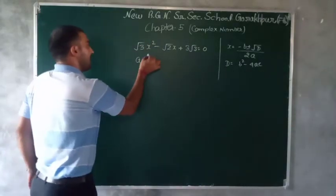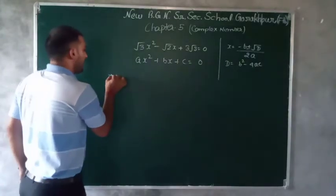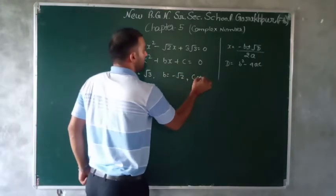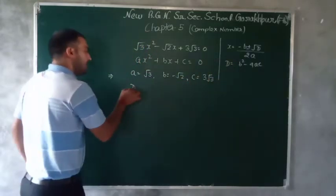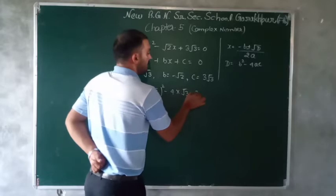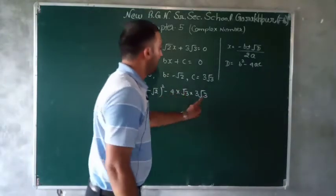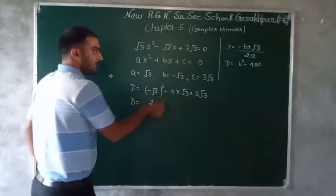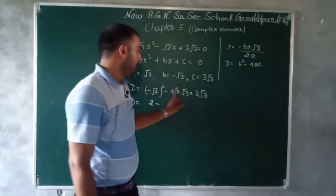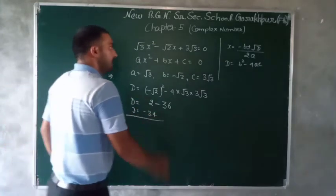Standard form ax² + bx + c = 0 से compare करने पर: a = √3, b = -√2, c = 3√3। Firstly find D: D = b² - 4ac = (-√2)² - 4(√3)(3√3) = 2 - 4 × 3 × 3 = 2 - 36 = -34। D की value आई minus 34।